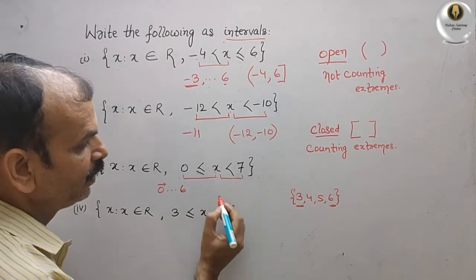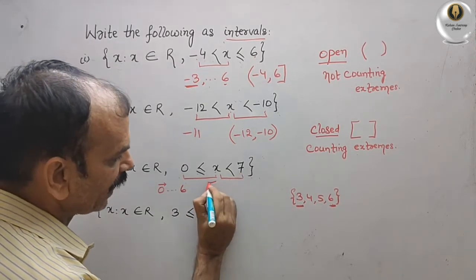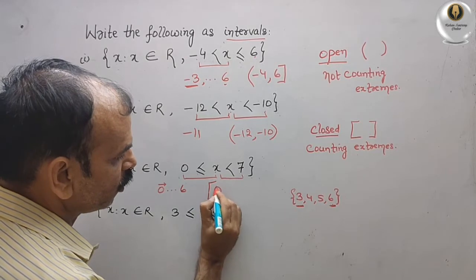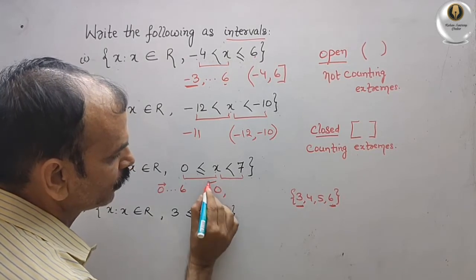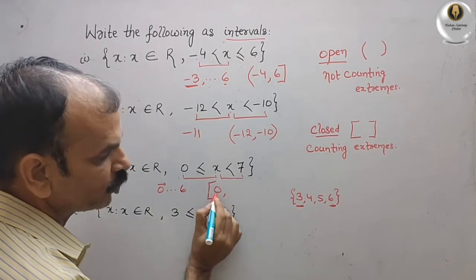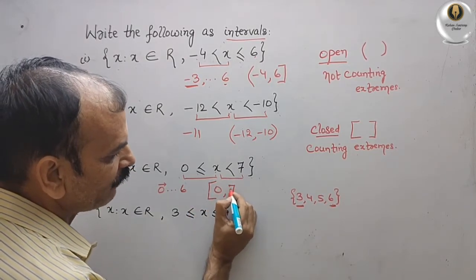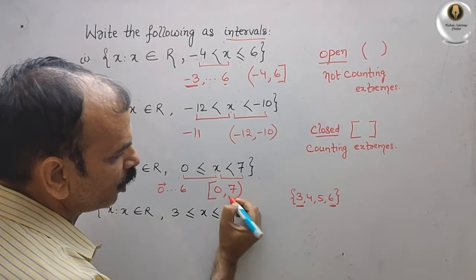So we write this as [0, 7) — a big bracket on the left since 0 is included, and a small bracket on the right since 7 is excluded.